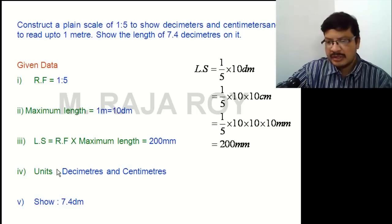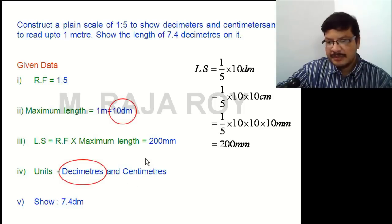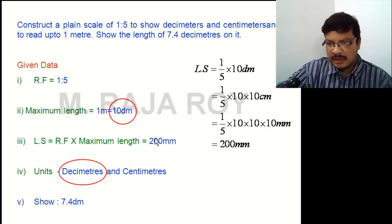That is the length of the scale. The units to be represented are decimeters and centimeters. After drawing the scale, show the distance of 7.4 decimeters. Take the length of the scale and draw a line of 200 mm length, then divide that line into equal parts. To decide the number, observe the maximum unit — the decimeter — and maximum length, which is 1 meter equal to 10 decimeters. Divide the 200 mm long line into 10 parts; each part is 1 decimeter, giving a maximum length of 10 decimeters.